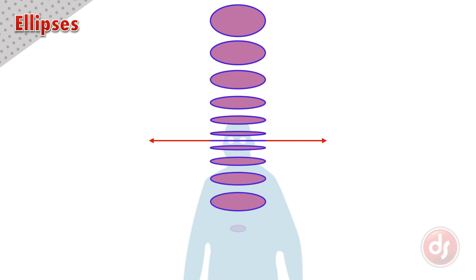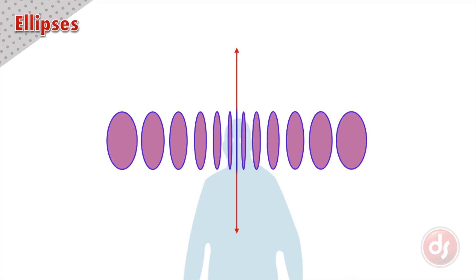This is true when we go below the eye level as well. The same applies to a vertical line that goes through the viewer's center of vision. An ellipse in the center will be a straight line and become more open as they move away from the center of vision.